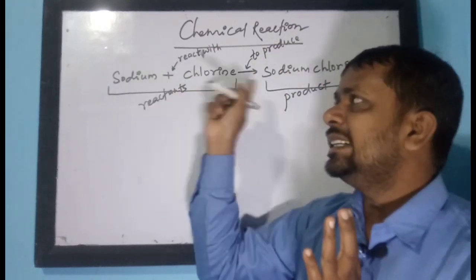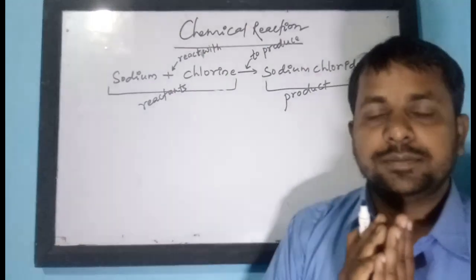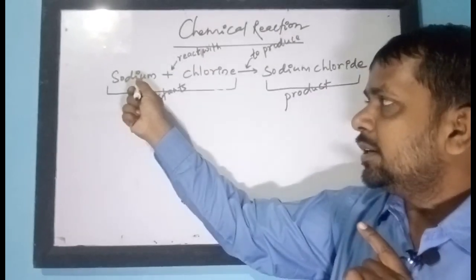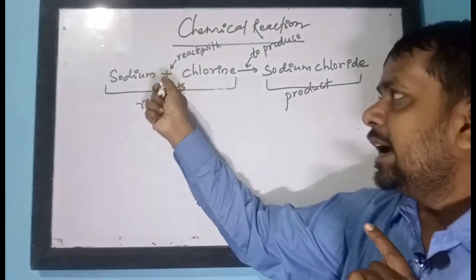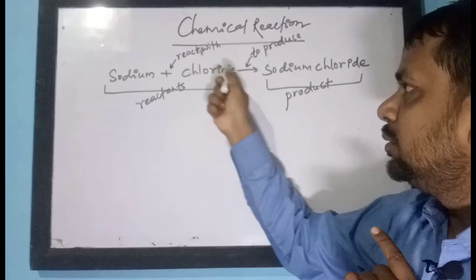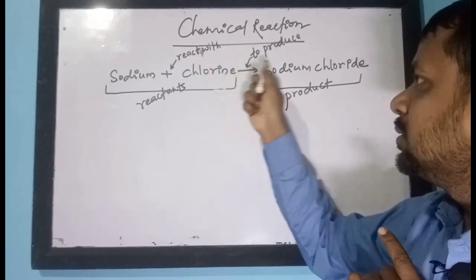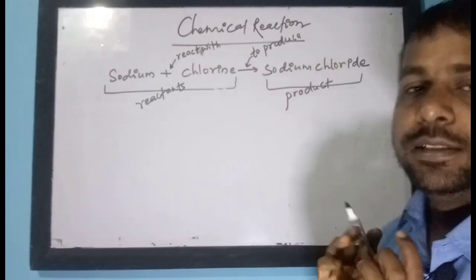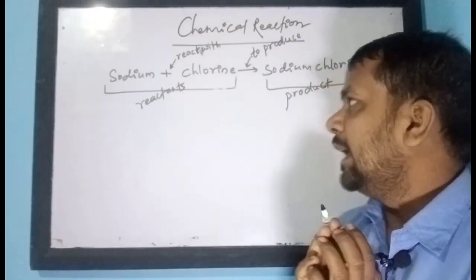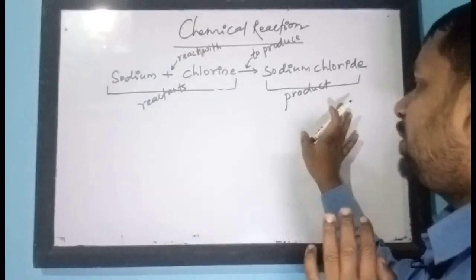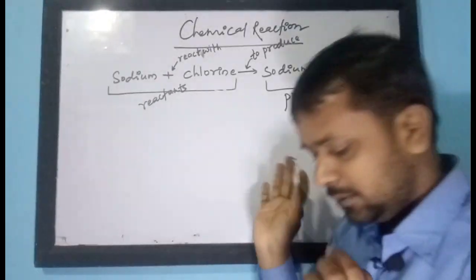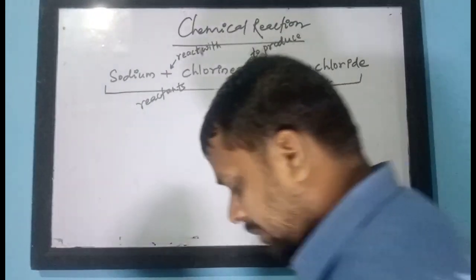The arrow in the middle between reactant and product represents 'to produce.' How do we read this reaction? Sodium reacts with chlorine to produce sodium chloride. And if there is a plus sign on the product side, let us see one more example.